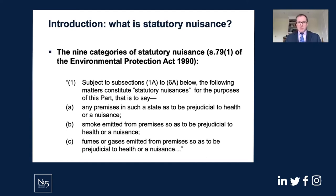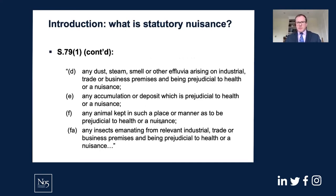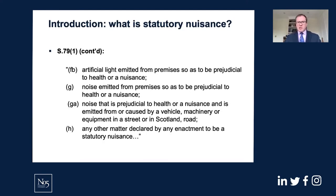There are nine categories of statutory nuisance listed in section 79(1) of the Environmental Protection Act. Category A is the state of premises; B is smoke emitted from premises; C is fumes or gases from premises — all require being 'prejudicial to health or a nuisance.' Category D is dust, steam, smell, or other effluvia from industrial, trade, or business premises. E is accumulations or deposits; F is animals; there are also categories for insects, artificial light, noise emitted from premises, and noise from a vehicle, machinery or equipment in a street. Category H is a catch-all for matters declared by other Acts to be statutory nuisances.